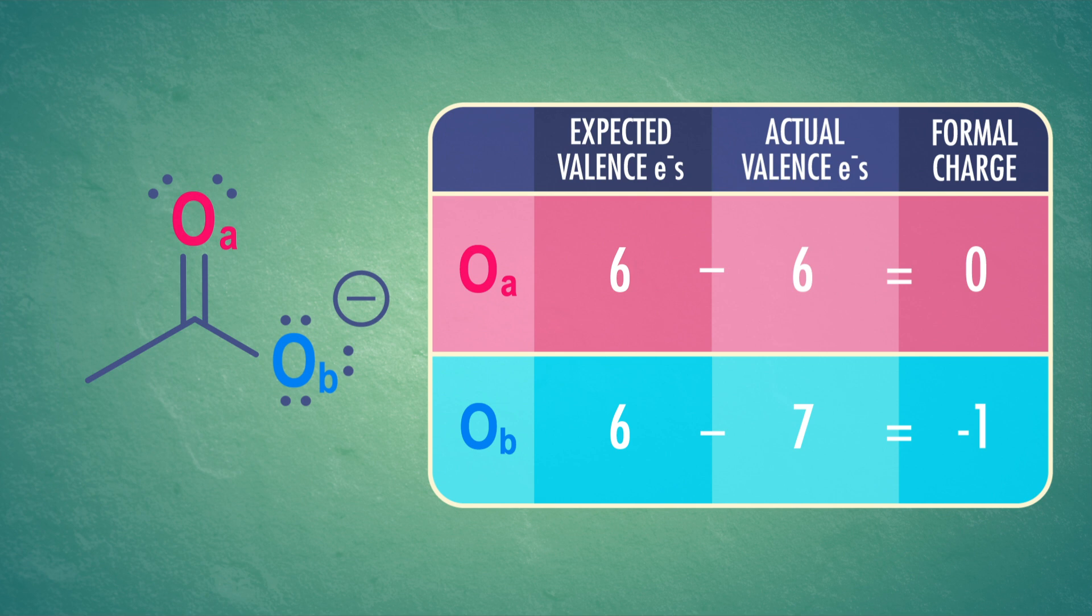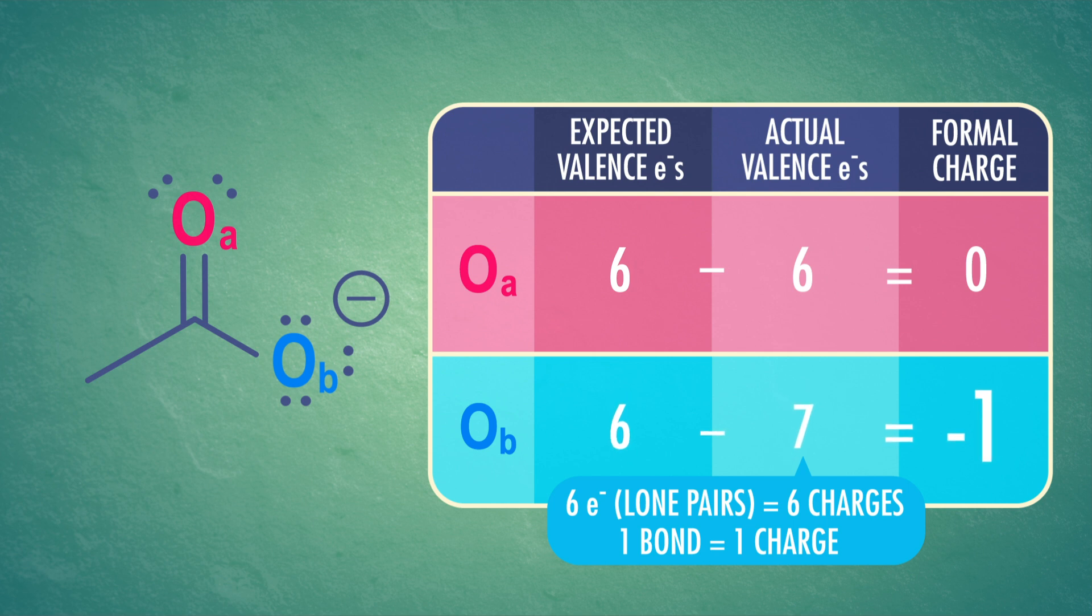So, in this case, a neutral oxygen atom has six valence electrons. The single bonded oxygen we're looking at has six electrons in lone pairs, which counts as six charges. It also has one bond, which counts as one charge, because the electrons are shared between two atoms. Six minus seven is negative one, which is the formal negative charge.